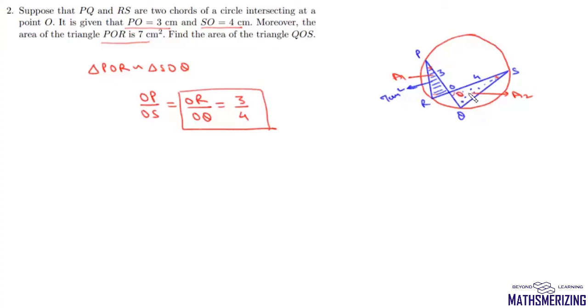Now say this angle is theta. We can write A1 as (1/2)·OR·OP·sin(theta) and A2 as (1/2)·OQ·OS·sin(theta). Now if we divide them, we get A1/A2 = (OR/OQ)·(OP/OS).